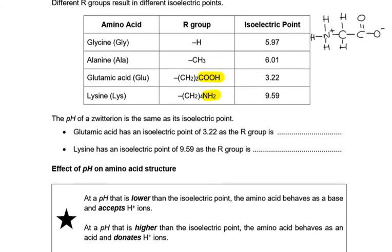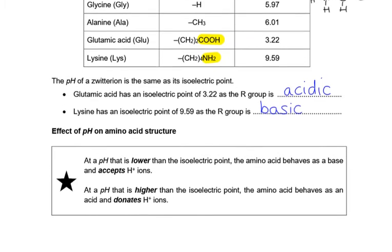So the pH of a zwitterion is the same as its isoelectric point. Glutamic acid has an isoelectric point of 3.22 as the R group is acidic. So our R group was what? It had that COO in it, it was acidic. And the isoelectric point of lysine is higher than 7 because the R group is basic. And remember by basic we mean not an acid, it's a base, not that it's suddenly easy, but that it's basic.